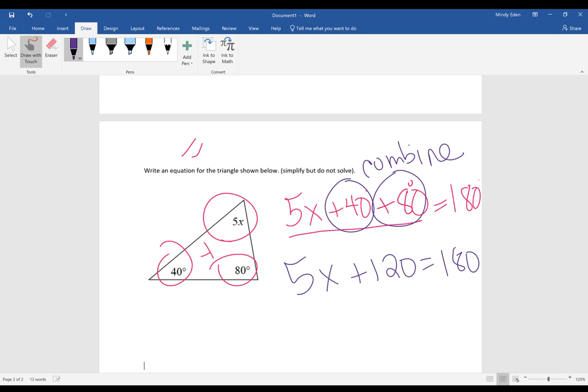The 180 is all by itself on the right side of the equal sign so we're going to leave that alone. So if I want an equation, this would be my correct answer: 5x plus 120 equals 180.